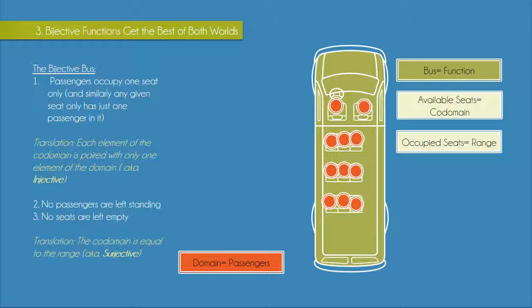If we want the assignment of seats to also be surjective, we need the range to be equal to the codomain. So the set of occupied seats must be equal to the set of available seats. In other words, all the seats are filled and the bus is full. Since the assigning of seats is both injective and surjective, we can say that it is bijective.